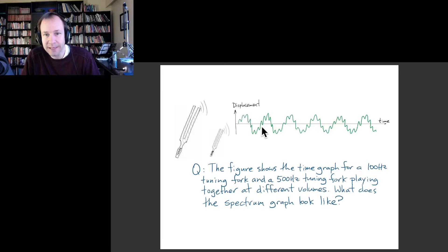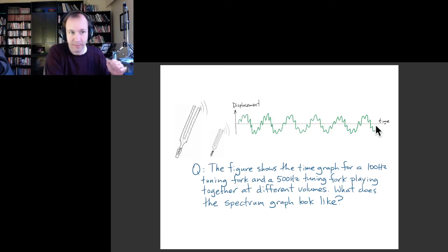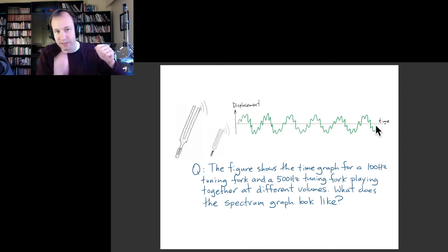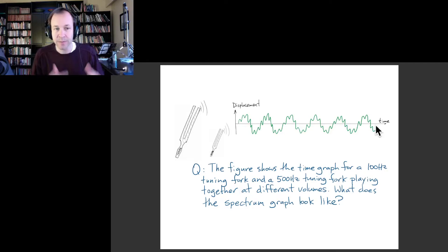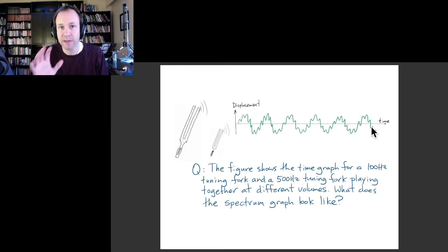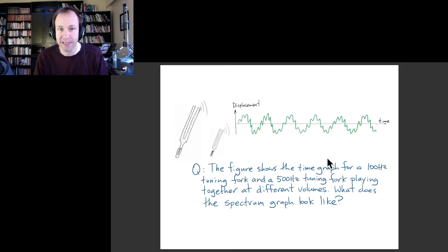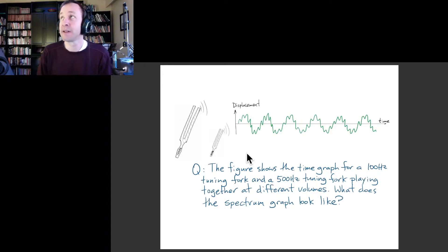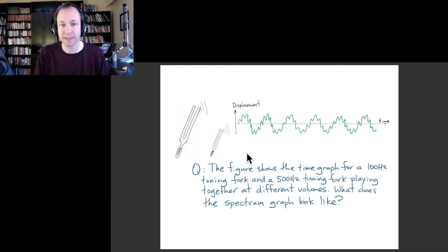The time graph looks like one we saw in a previous lecture. Now it's two tuning forks. What we want to know is: what will the spectrum graph look like for this particular combination? Maybe pause the video and take a minute to think about what you would come up with for the spectrum graph in this case.